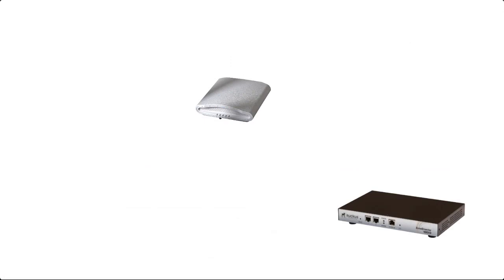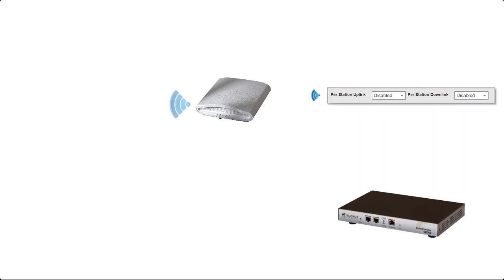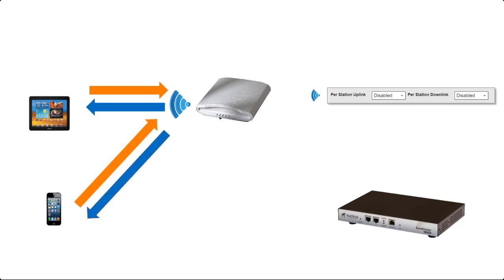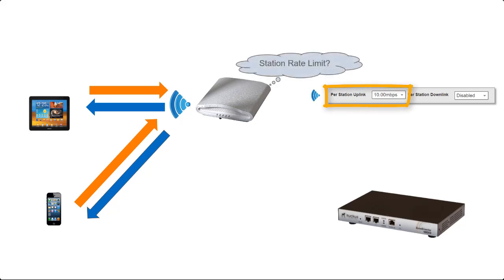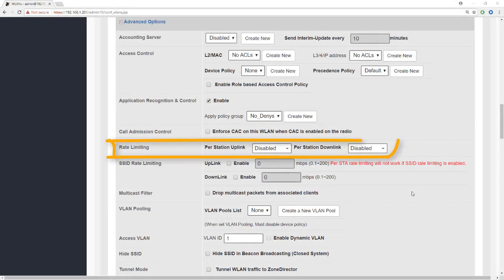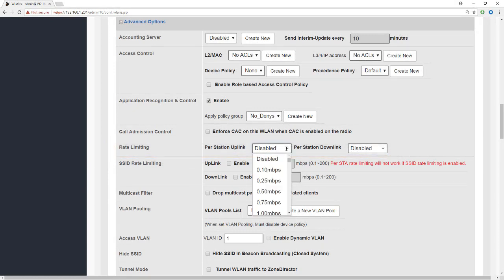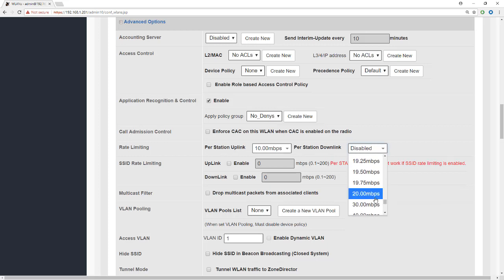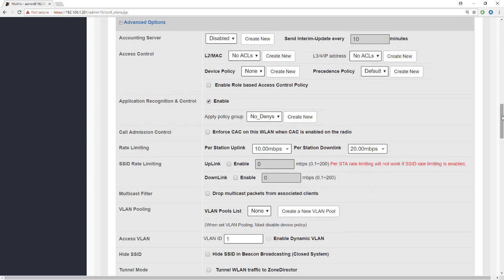For station rate limiting, we create a new WLAN — by default station rate limiting is disabled. The WLAN is pushed down to the access point and clients join and operate normally. We can then select a rate limit: the first option is the uplink. We select a value and the access point applies that rate limit equally to all stations. We can also add a per-station downlink setting, which applies a downlink rate limit to all stations equally. Let's apply a rate limit of 10 Mbps up and 20 Mbps down — simple to apply and it affects all devices on the WLAN.